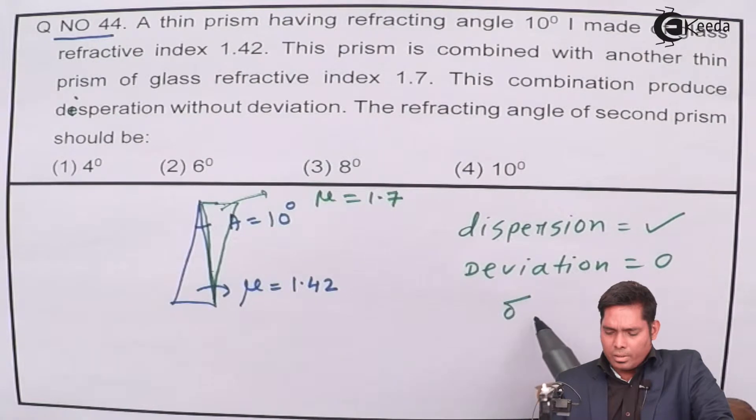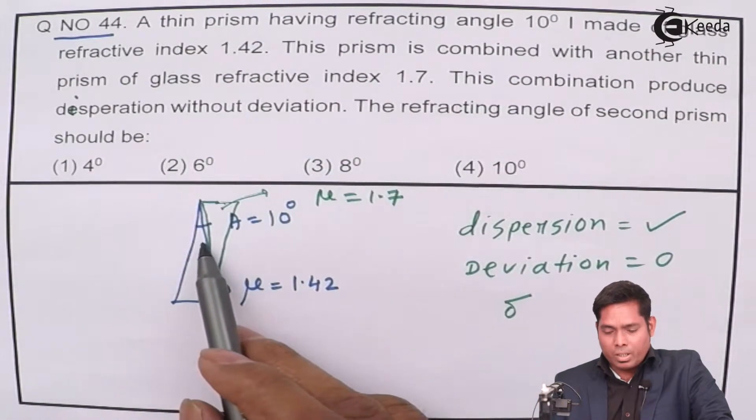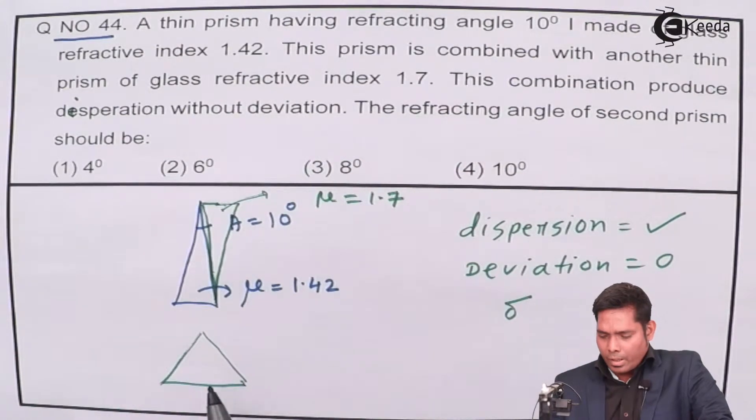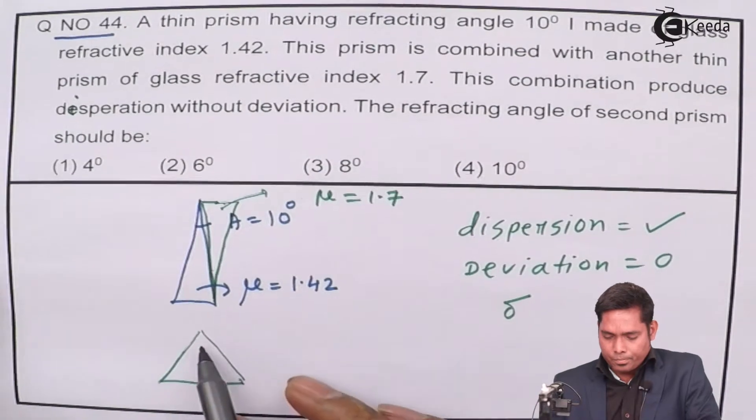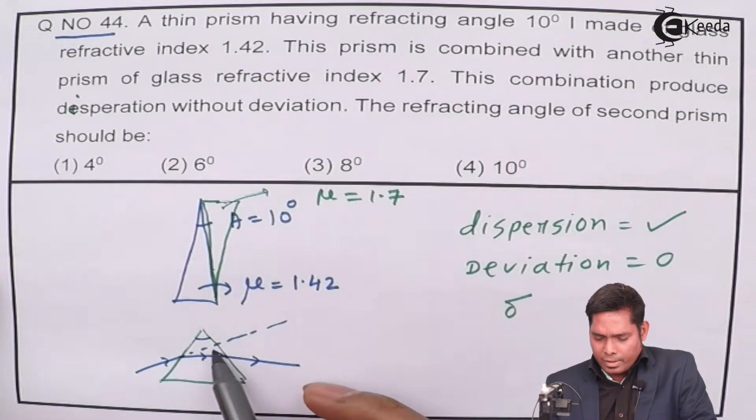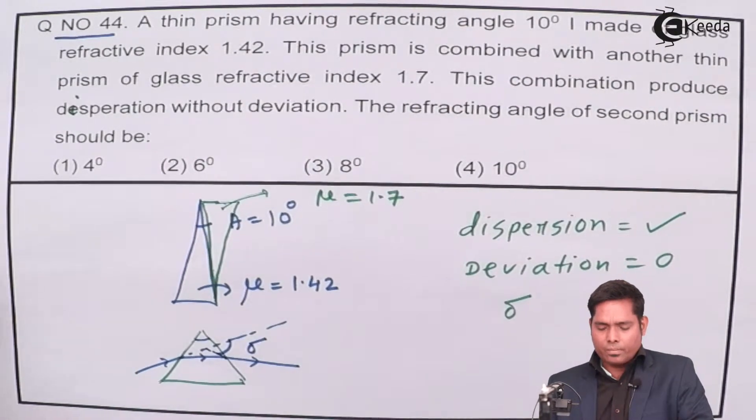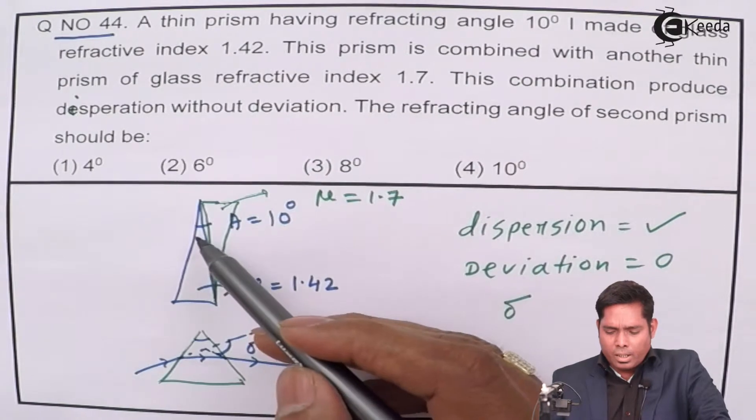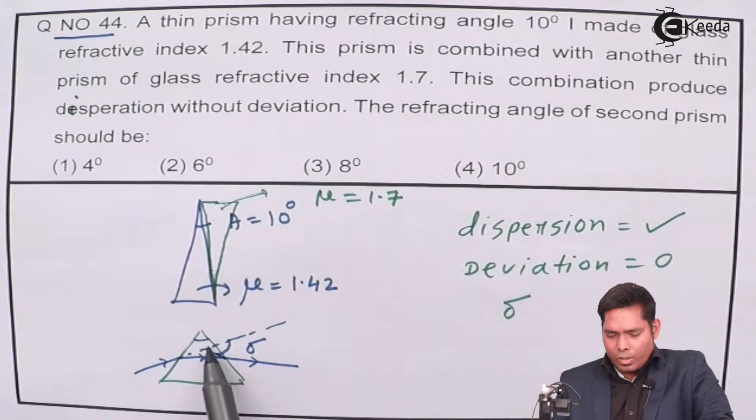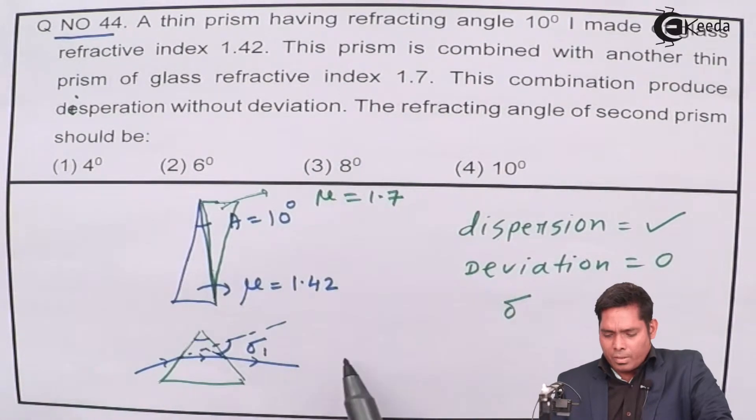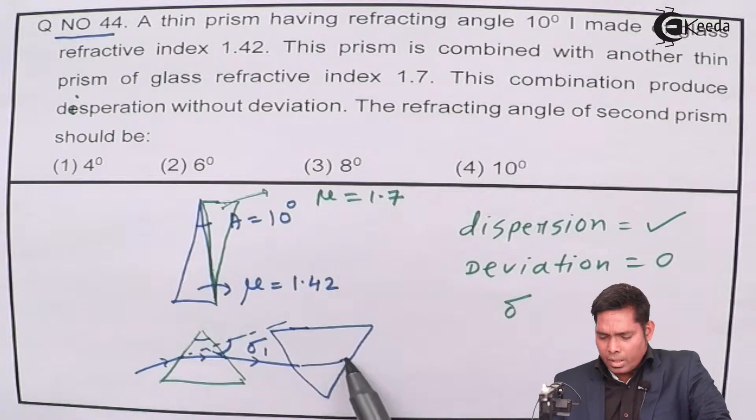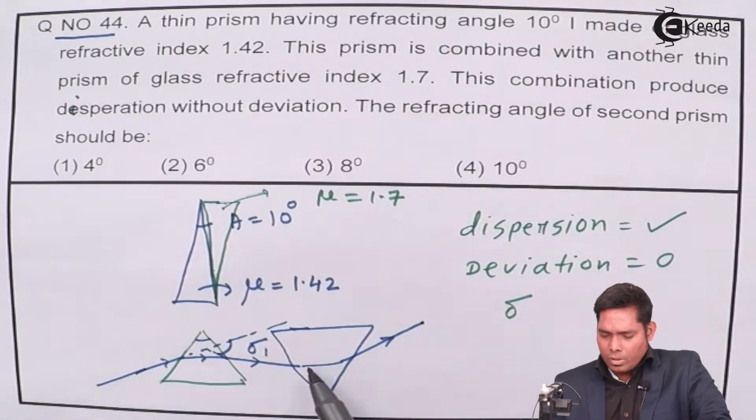Zero deviation means that this prism will have some angle of deviation. When a ray of light passes through the prism, this is the original direction and this is the final direction. This is the deviation angle delta. This first prism will deviate the ray clockwise and because this is kept inverted, this will deviate anticlockwise.